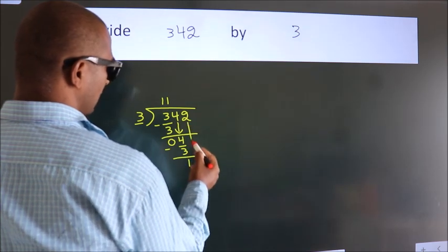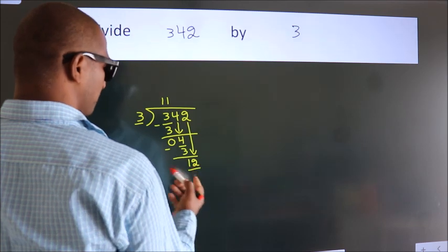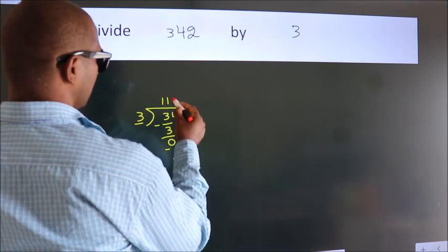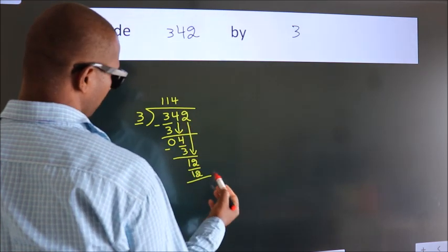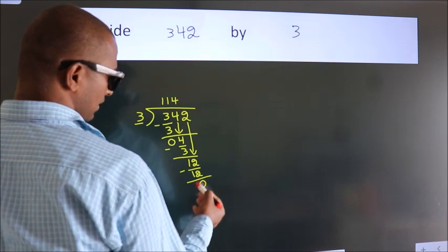After this, bring down the beside number. So 2 down. So 12. When do we get 12? In 3 table, 3 fourths, 12. Now, we subtract. We get 0.